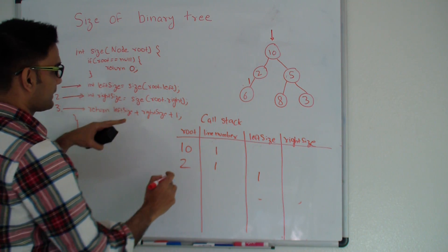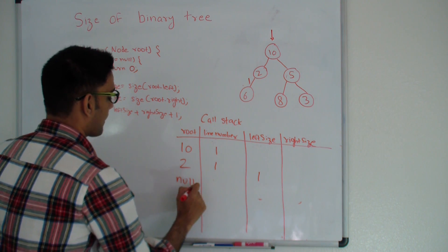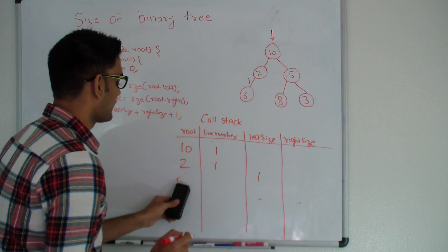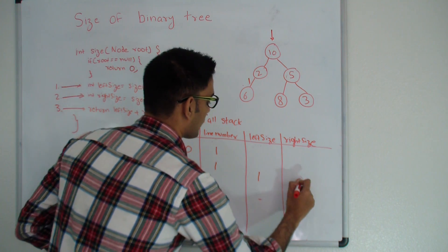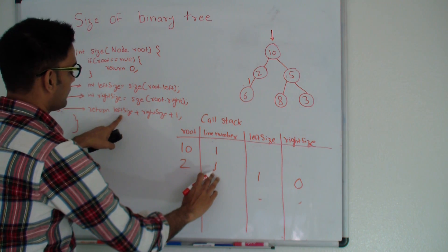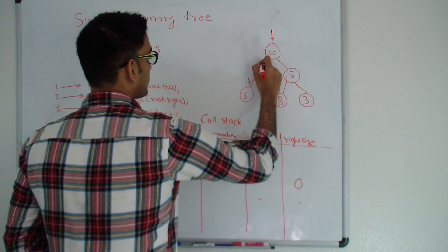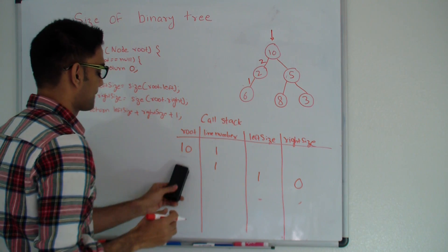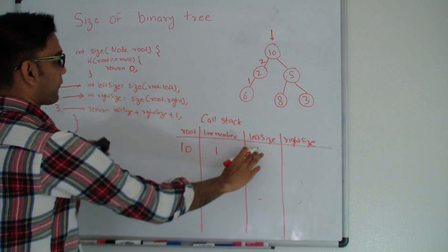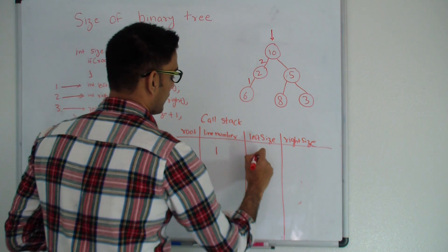Now node 2 calls its right side recursively, which is null, so it returns 0. Node 2 gets 0 from its right side. So finally, node 2 returns left size 1 + right size 0 + 1, which equals 2. Node 2 returns 2 to node 10, so the left size for 10 is 2.